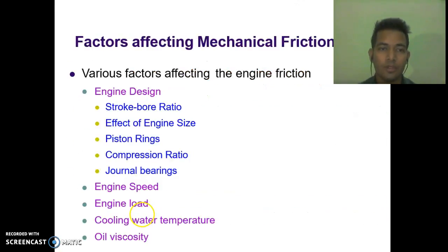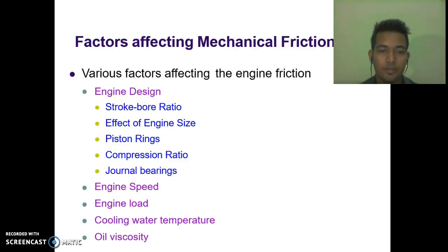Now we discuss the factors affecting mechanical friction. Various factors affecting engine friction include engine design factors — such as stroke-bore ratio, effect of engine size, piston rings, compression ratio, and journal bearings — as well as engine speed, engine load, cooling water temperature, and oil viscosity.